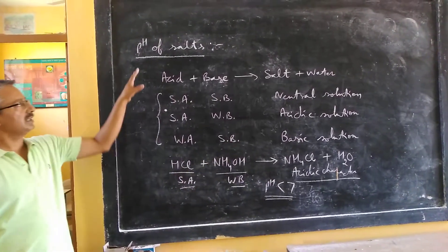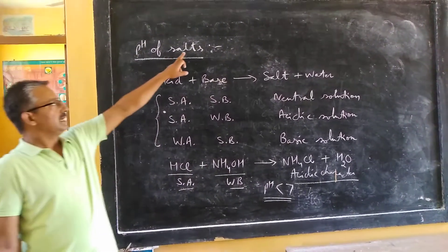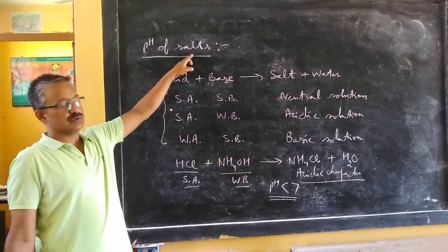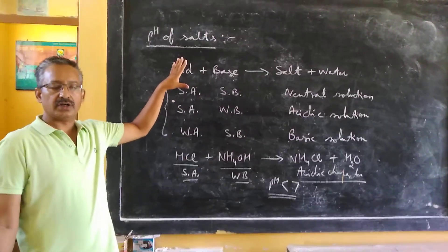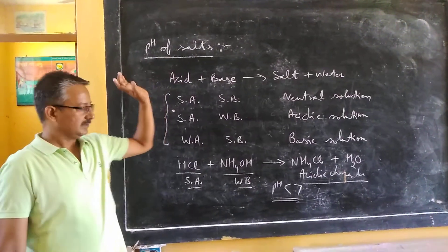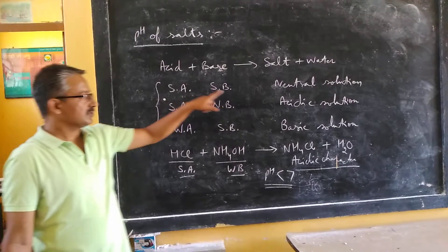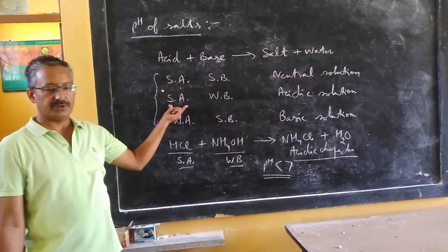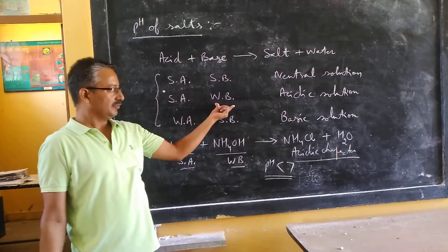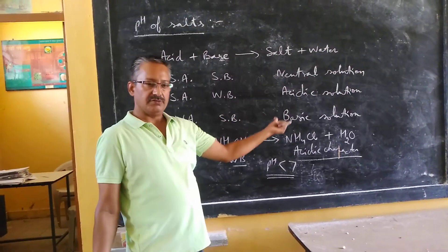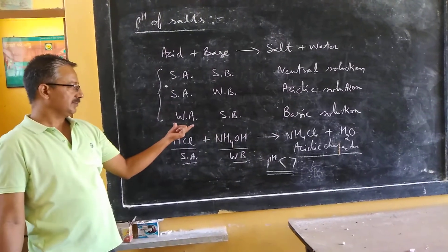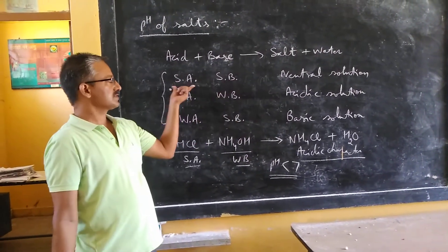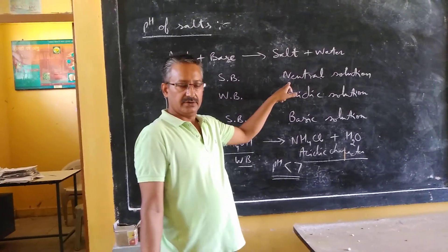So, what is the overall thing to be learned? Salts also possess pH values — they can be acidic salts, basic salts, or neutral salts. An acidic salt is formed by the combination of a strong acid and a weak base. A basic salt is formed by the combination of a weak acid and a strong base. If both are strong, then the solution formed will be neutral.